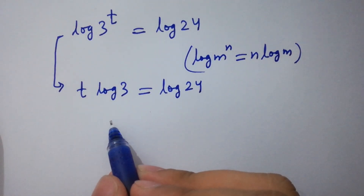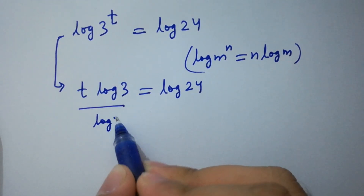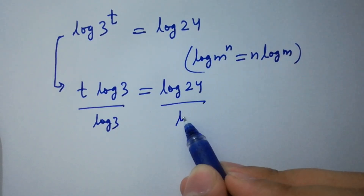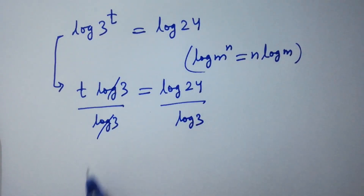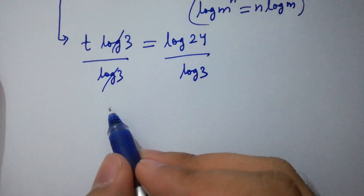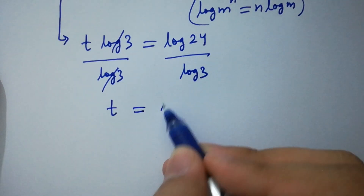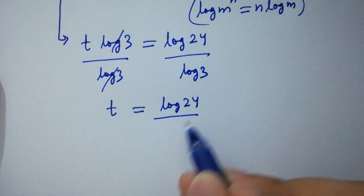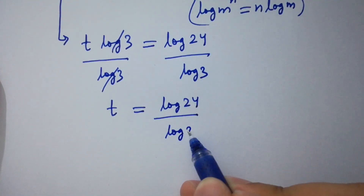Then it will be t log 3 equals log 24. Dividing both sides by log 3, we have t equal to log 24 over log 3.